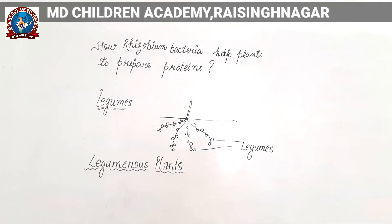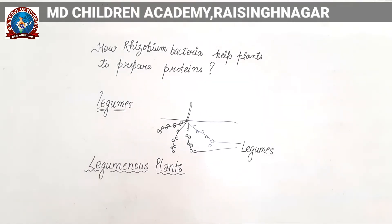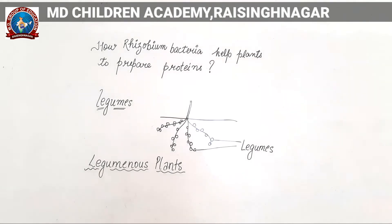Now the next question is how rhizobium bacteria helps plants to prepare proteins. We understood blue-green algae. Now the next part is how rhizobium bacteria helps plants to get nitrogen and prepare proteins. Before starting that, we will learn about a different kind of plants known as leguminous plants. As you can see a picture on the board.